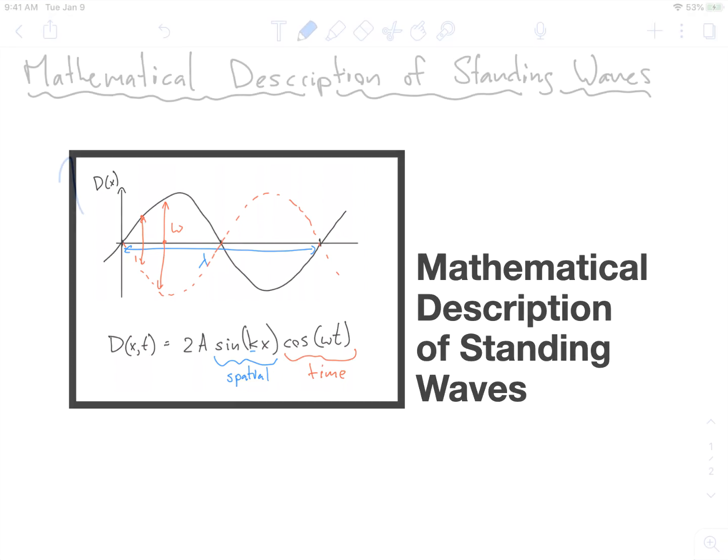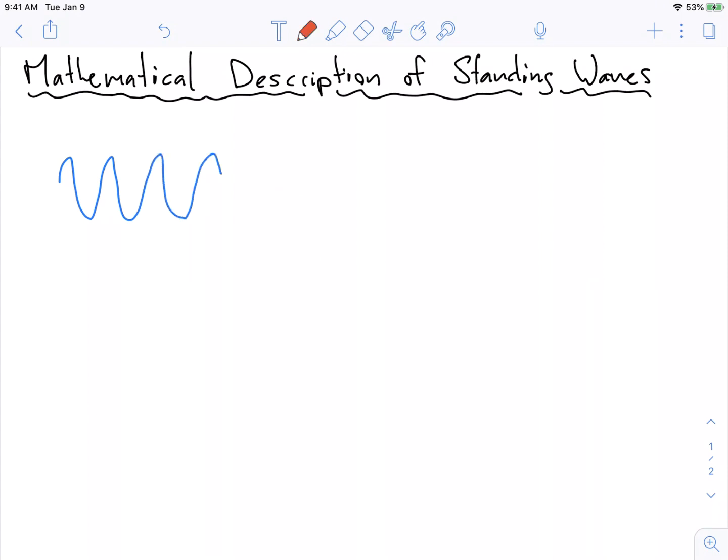So let's draw those. Imagine we have one wave traveling to the right and another wave that's identical to it traveling to the left. We can describe these waves mathematically as D₁(x,t), and what's important is that both of these waves are identical to each other in every way.